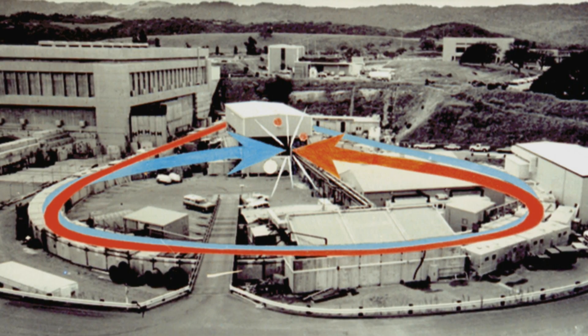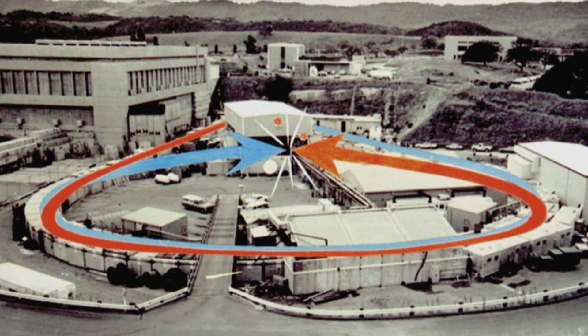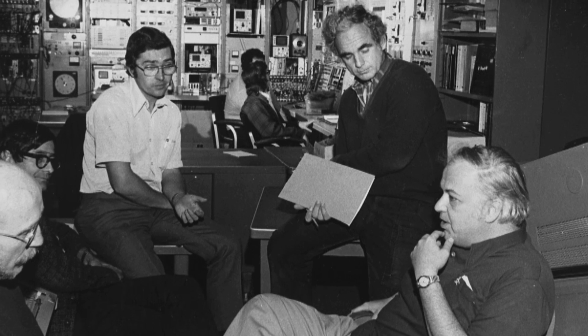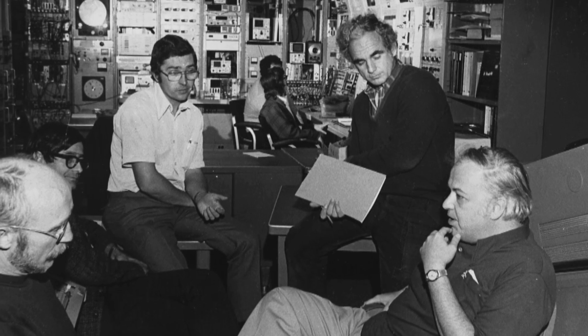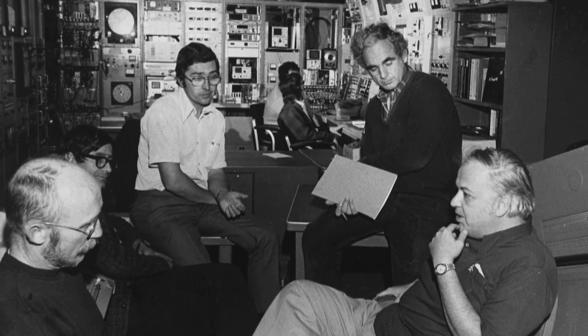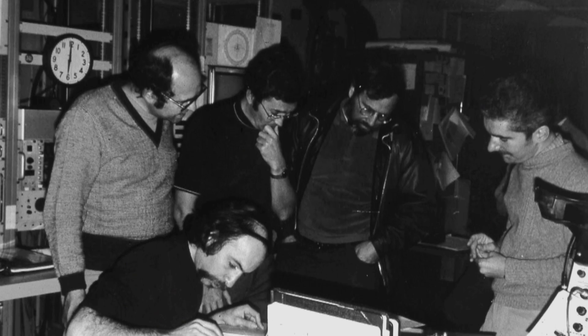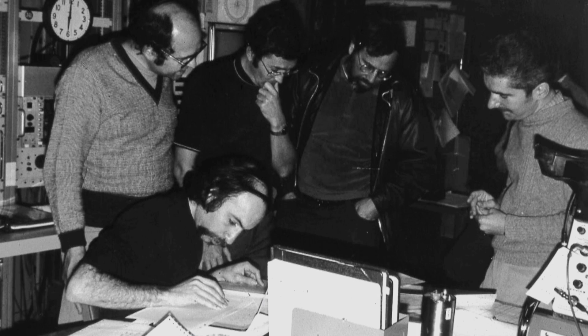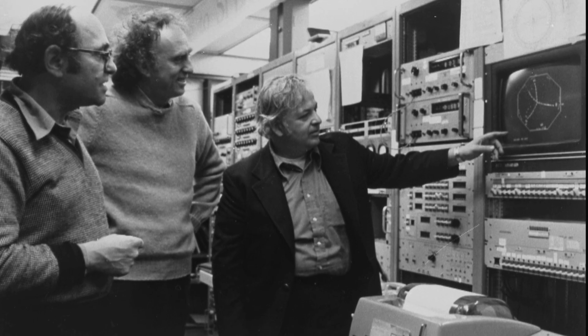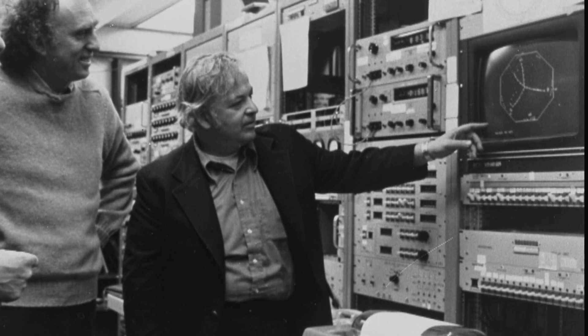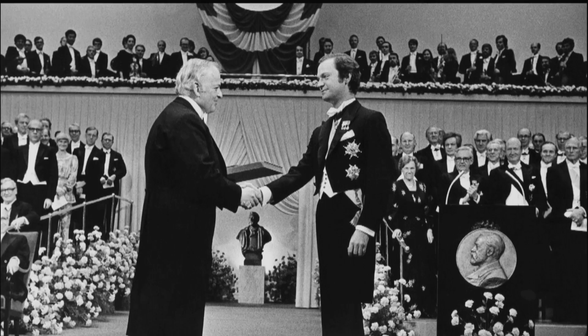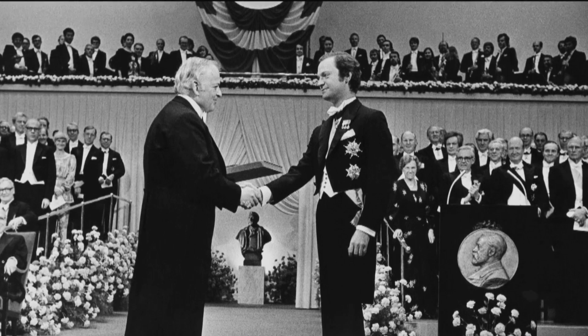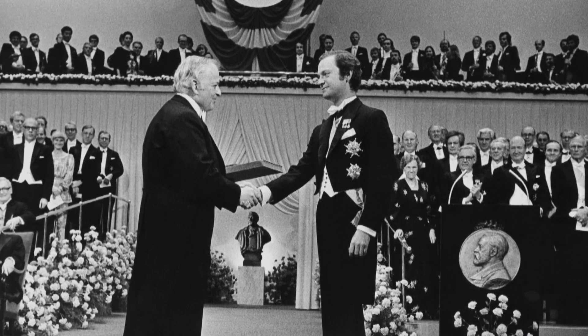In 1974, two years after turning on the SPEAR Collider, Richter and his team found something unexpected. We discovered something that wasn't supposed to be there. Richter's team had found a heavy particle made up of a fourth type of quark. His discovery of this so-called charm quark won Richter the 1976 Nobel Prize in Physics, and paved the way for a theory to explain how matter is organized.